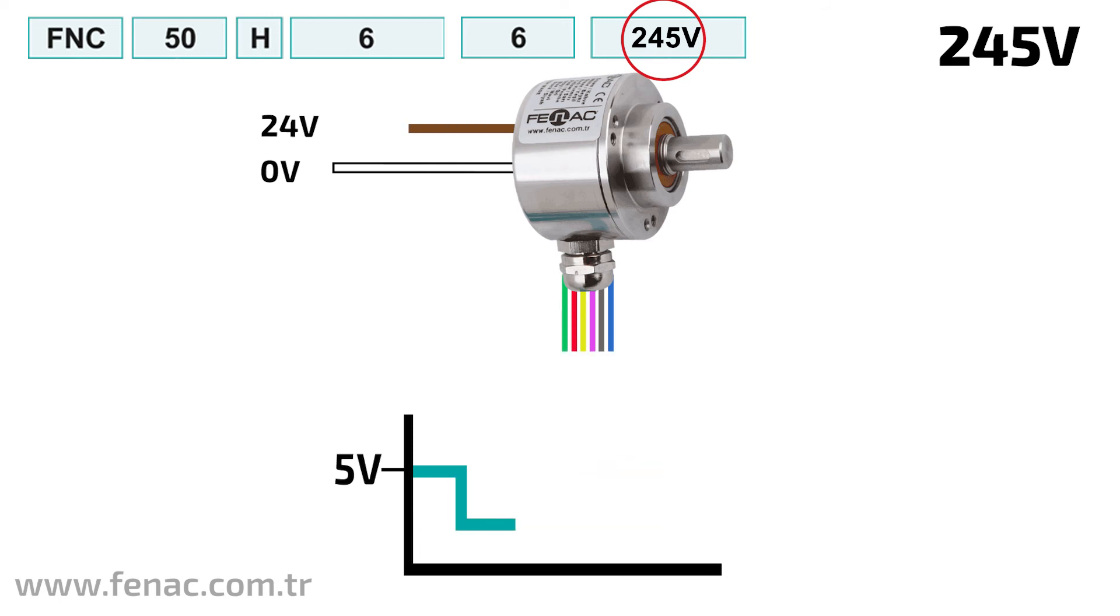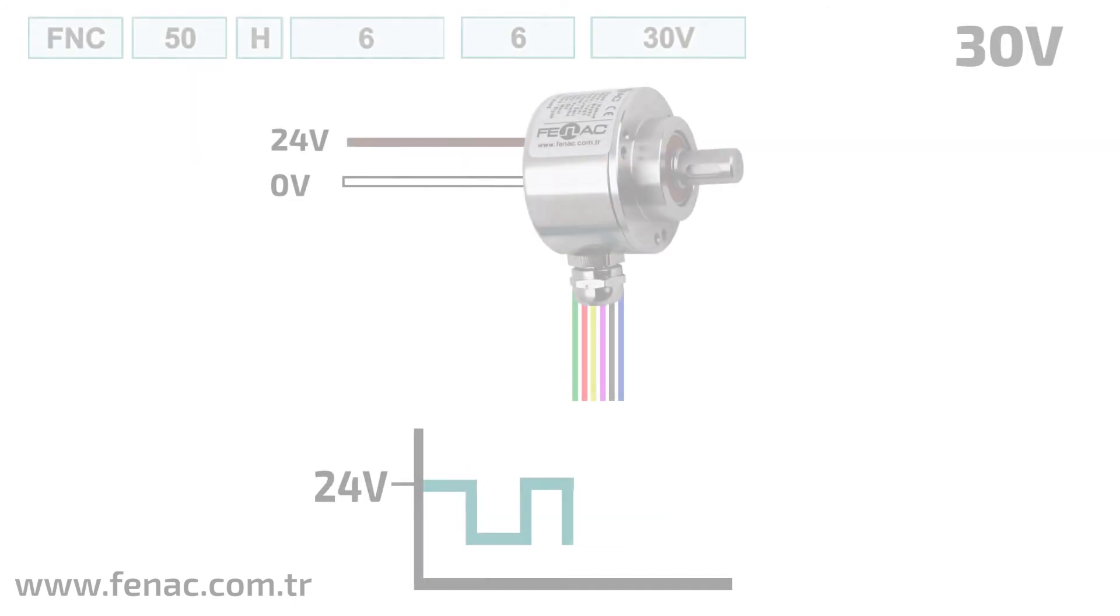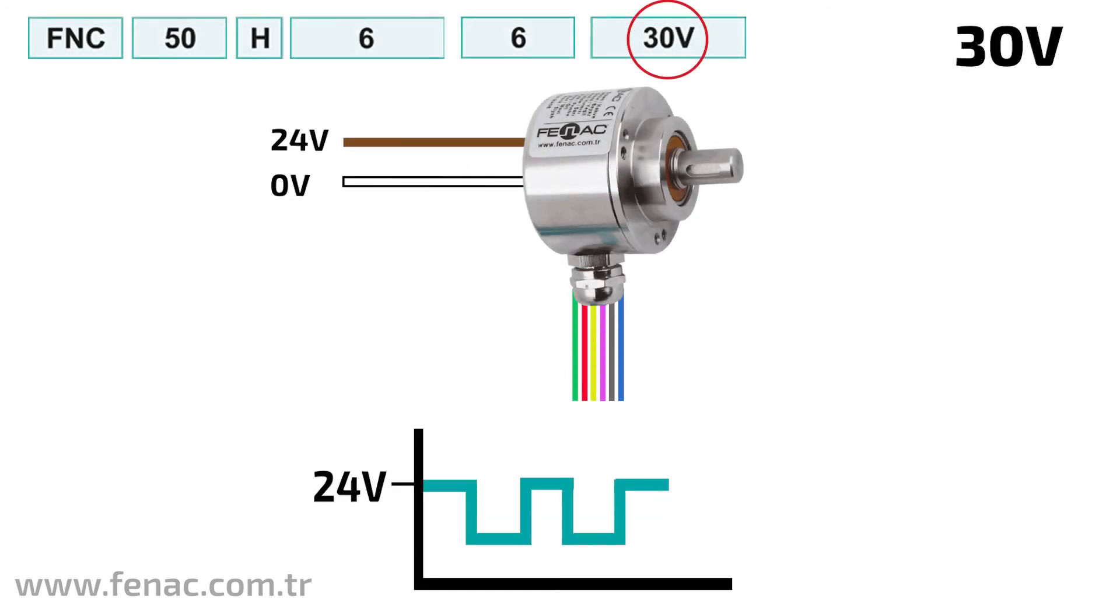For 30 VDC, supply voltage can be at the desired voltage level between plus 5 VDC and plus 30 VDC. At the encoder output, an output voltage is reached at the input voltage level. For example, if you supply the encoder with 12 VDC, you will get a 12 VDC level signal at the output.